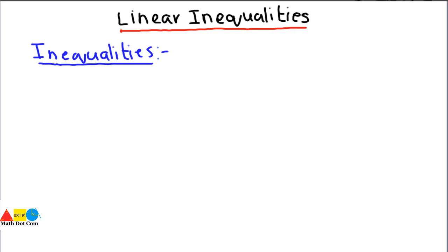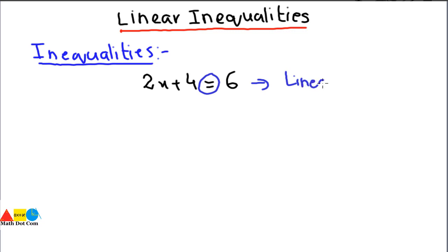Before studying linear inequalities, we will first discuss what inequalities actually are. We start from the concept of linear equations, where we came across equations like 2x + 4 = 6. This is called a linear equation in one variable — it is linear because the power of x is 1. It is called a linear equation because there is an equality sign.